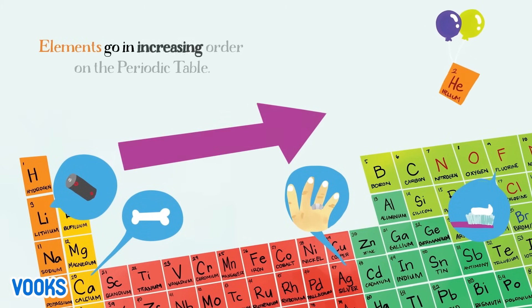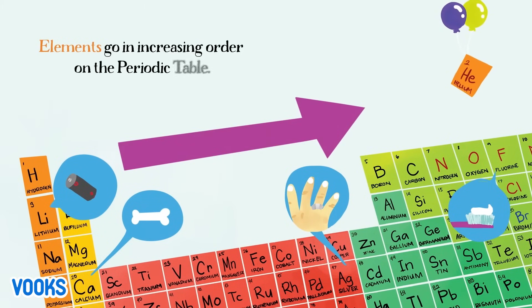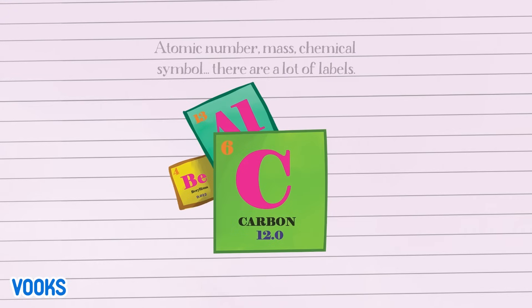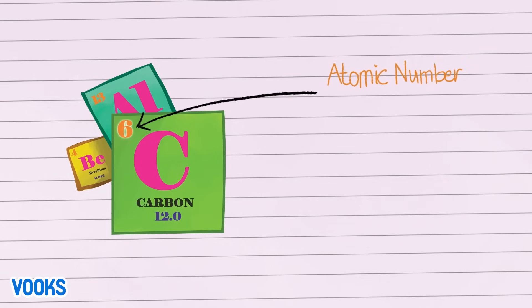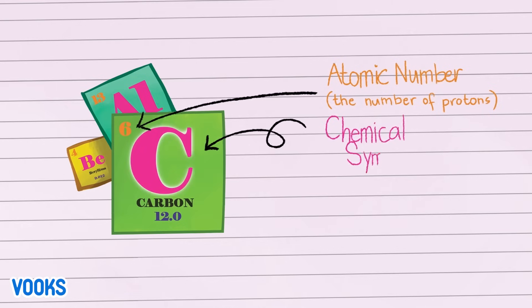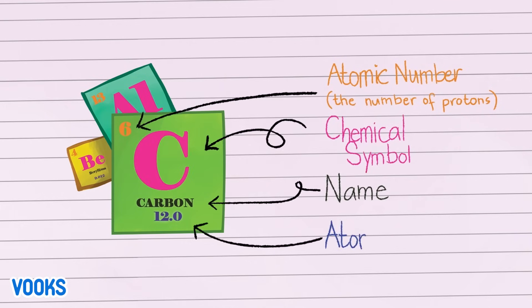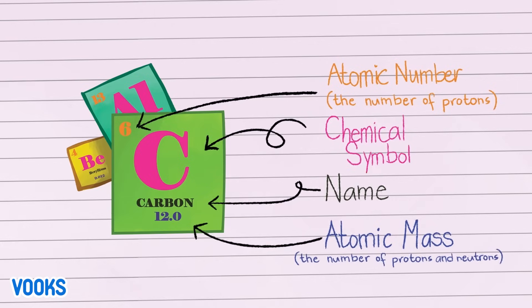Elements go in increasing order on the periodic table. Atomic number, mass, chemical symbol — there are a lot of labels. Atomic number: the number of protons. Chemical symbol: name. Atomic mass: the number of protons and neutrons.